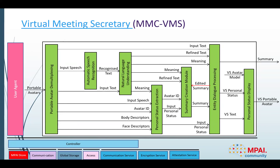This is the diagram of the virtual meeting secretary, which processes information about the portable avatars including recognized text from speech and various descriptors included in PATH. This input goes through processes such as natural language understanding and personal status extraction. The virtual secretary refines and summarizes the input, which is then processed by a dialogue processing module that can update avatar models, personal status, and text. The final output is, on one side, a summary of the conversation, and on the other side, the updated portable avatar representation including information extracted into TPS blocks.